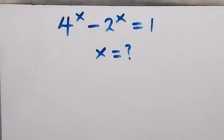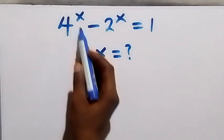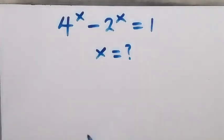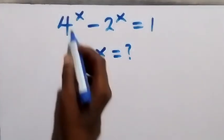Hello, you are welcome. Here we want to solve this exponential equation. We have 4 raised to power x minus 2 raised to power x equals to 1.